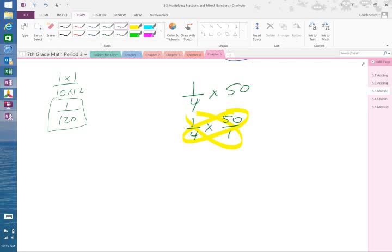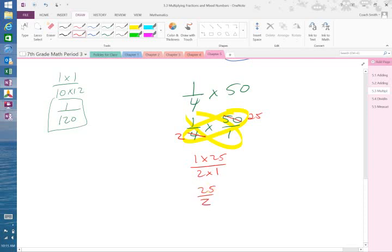Is there a common factor between 50 and 4? 2. 2 goes into 50 25 times. 2 goes into 4 2 times. Now, I have 1 times 25 on top and 2 times 1 on bottom. Which gives me 25 over 2. Which is an improper fraction.